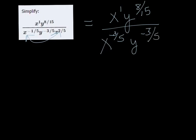And now I have an x in the top and an x in the bottom. So I can use the quotient rule and do 1 minus a negative 3 fifths. So 1 minus negative 3 fifths. Changing it to a fraction, I get x to the 8 fifths.